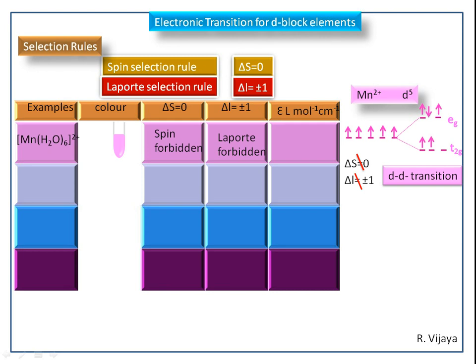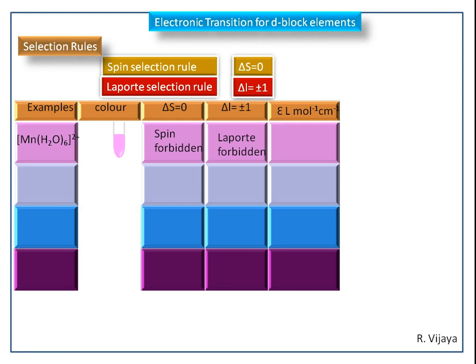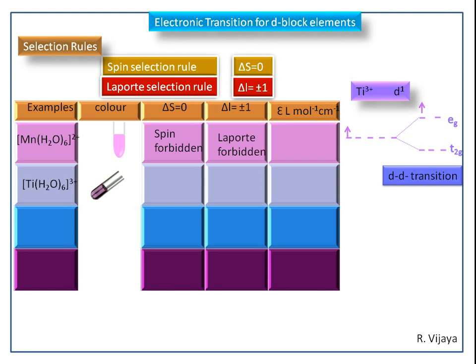Here, the delta L value is equal to 0. Next, we see the Hexa-Aqua-Titanium(III) complex. It is light purple in color. Its valence electronic configuration is 3d1 at the plus 3 oxidation state. It is octahedral geometry, so the electron is excited from the T2G orbital to the EG orbital — we get a D-D transition. During this transition, the spin direction is not changed, so it is a spin allowed transition. Because of this D-D transition, it is a Laporte forbidden transition.